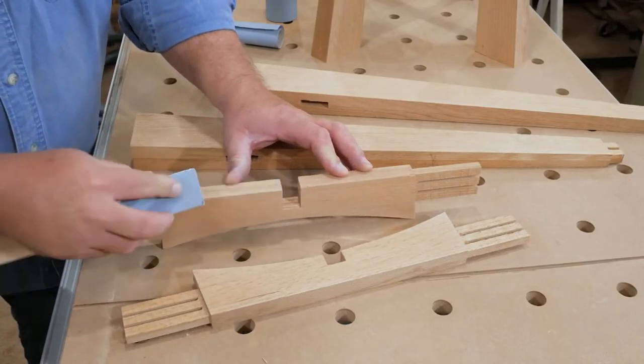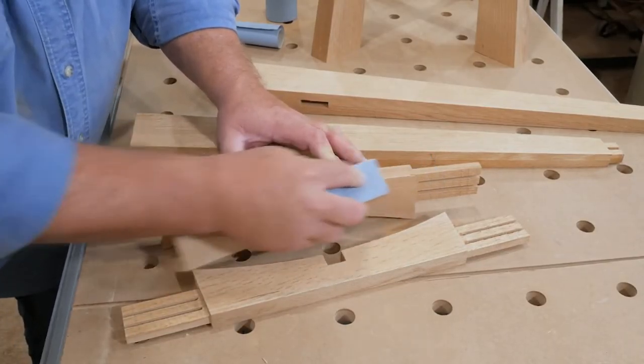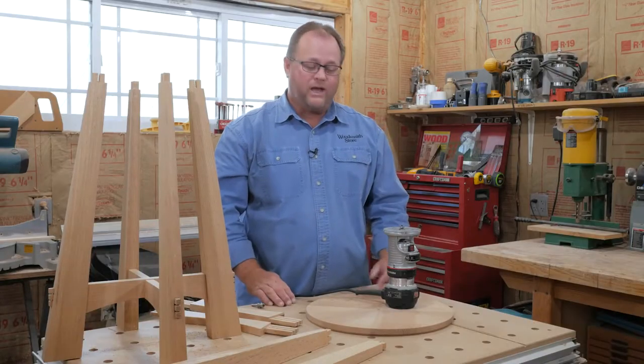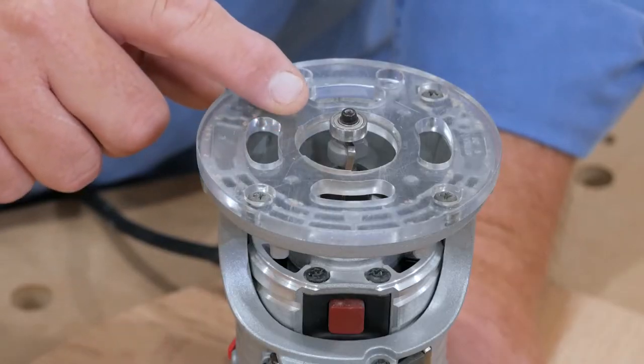Now I can just take a sanding block and go over them and try and make them all look the same. But I've found a better way, and that is a tiny roundover bit.